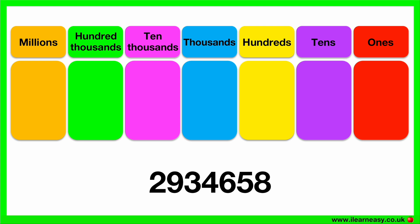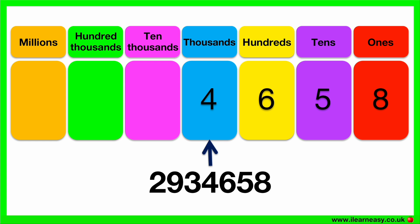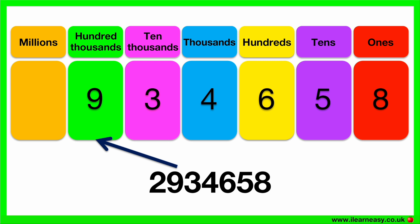Let's try another example. Here is a seven-digit number. Let's separate out the different numbers according to their place values. The number 8 goes in the ones group, the number 5 goes in the tens group, the number 6 goes in the hundreds group, the number 4 goes in the thousands group, the number 3 goes in the ten thousands group, the number 9 goes in the hundred thousands group, and the number 2 goes in the millions group. So this number is 2,934,658.